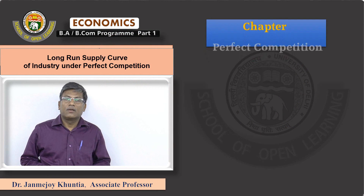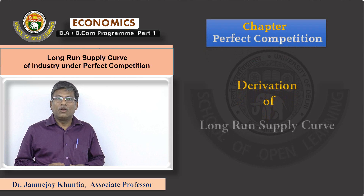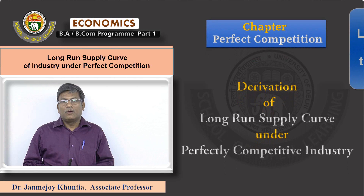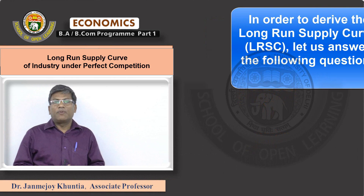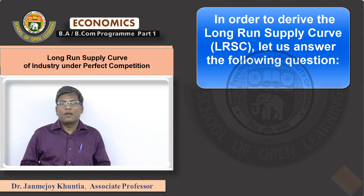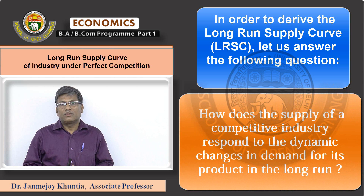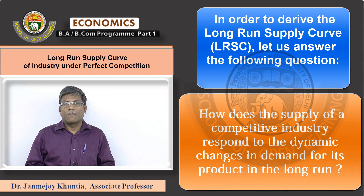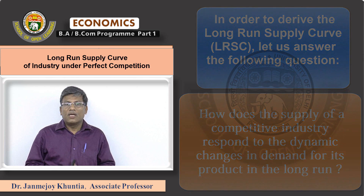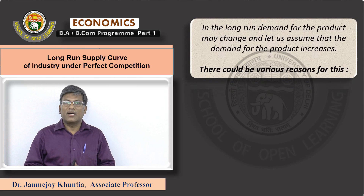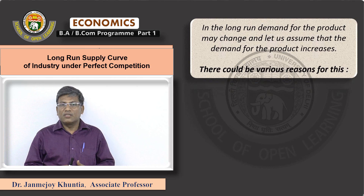This chapter covers perfect competition, and the topic is the derivation of the long-run supply curve under a perfectly competitive industry. In this topic, we are going to answer a particular question: how does the supply of a competitive industry respond to dynamic changes in demand for the product in the long run? In the long run, the demand for the product may change — let us assume that the demand for the product increases. There could be various reasons for this.